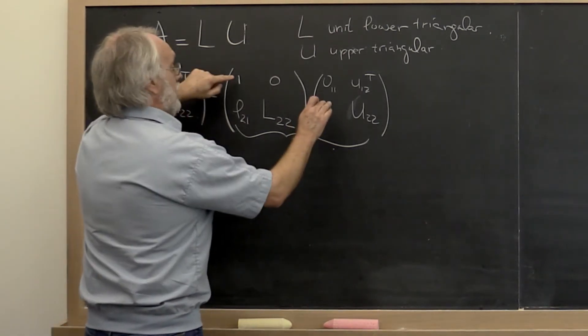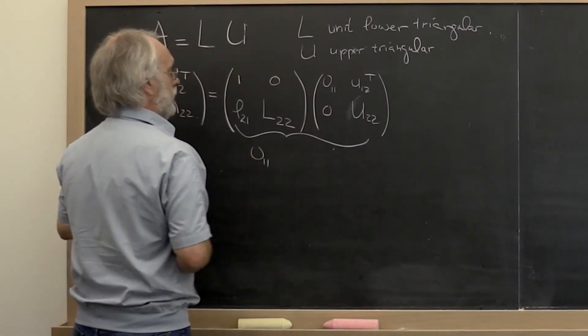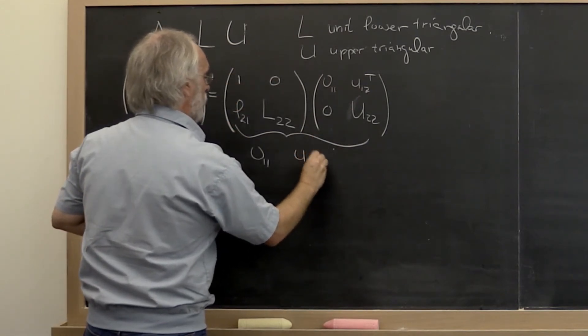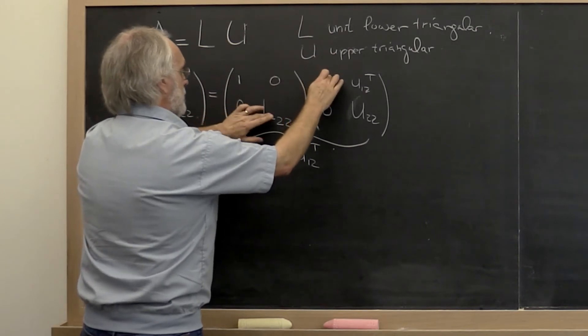So it's this times that plus this times that. That means the first entry is upsilon 1 1. It's this times that plus this times that, meaning the rest of the row is U 1 2 transpose.